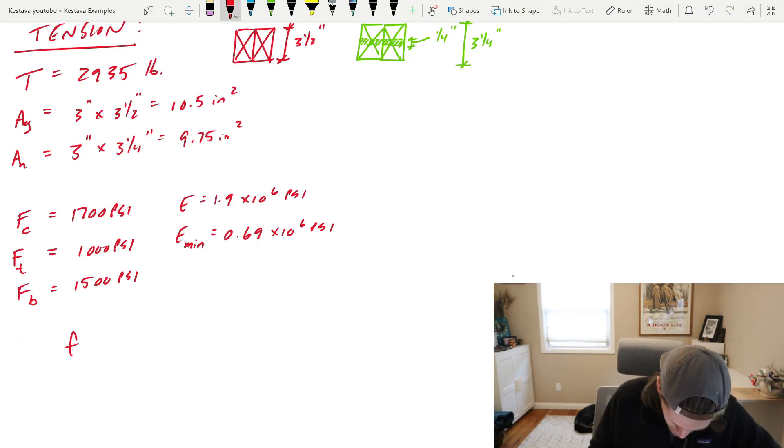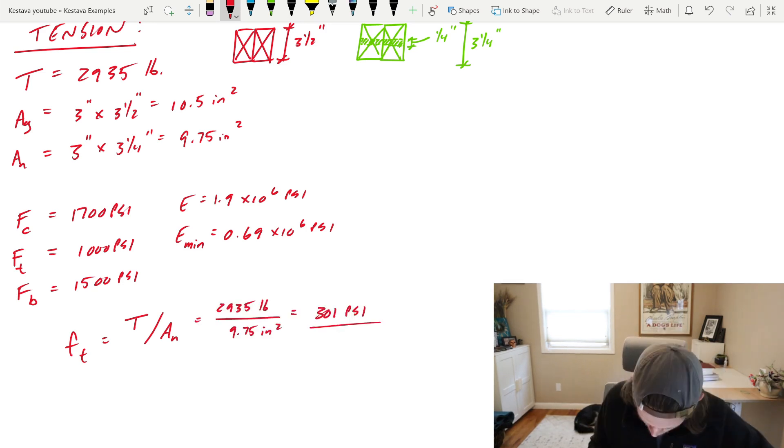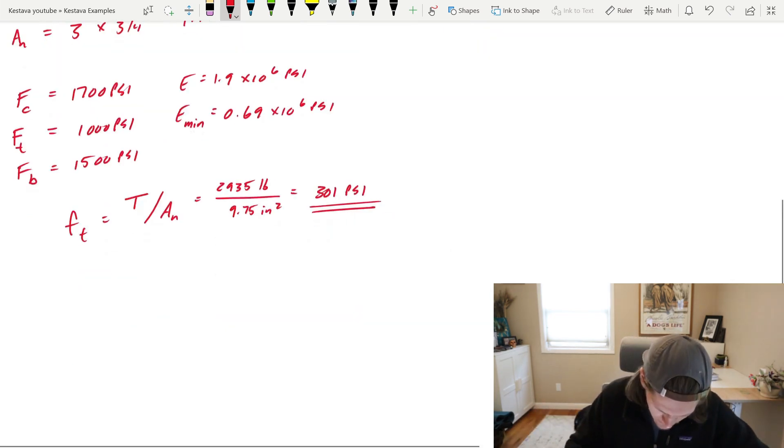Now we actually need our properties for the wood that we're using. So we're going to the supplement next for Doug Fir Larch. Finding your max tension stress is very straightforward. It's just your max force T divided by your net area. That's force over area that gets you a stress, 301 PSI. Now that is your demand, and we're running ASD.